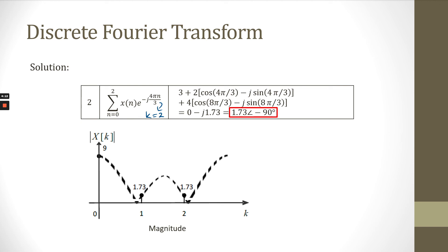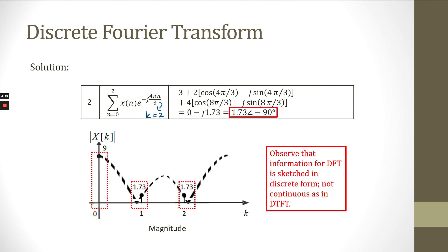Next, we sketch the magnitude for the DFT signal X[k]. We have 9 for k=0, 1.73 for k=1, and 1.73 for k=2. We observe that the information for the DFT signal X[k] is represented in discrete form, not continuous as in the DTFT. We do not have values in between these points, since we calculated only for k=0, 1, and 2. This is the discrete format, not continuous as in the DTFT — the dashed line portions do not exist.